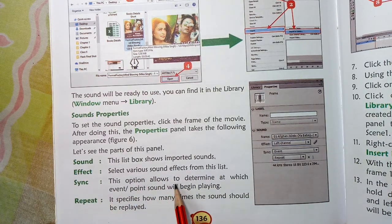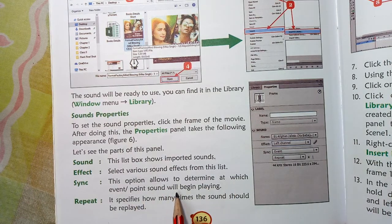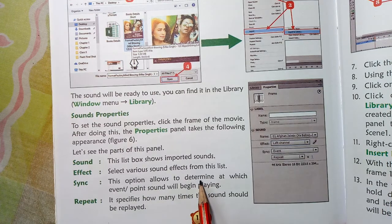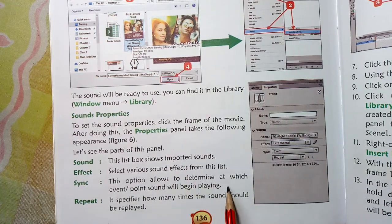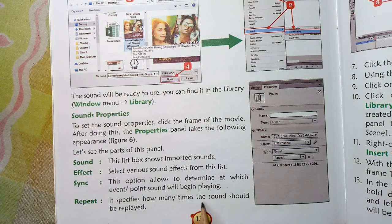Select various sound effects from this list. Sync — this option allows you to determine at which event or point the sound should begin playing. You can select when and where the sound comes from. Repeat — it specifies how many times the sound should be played.